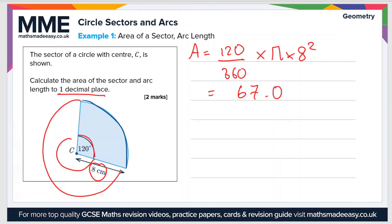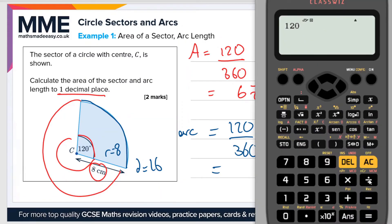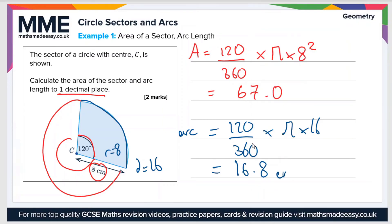Next, let's calculate the arc length — changing to blue for clarity. Arc length equals 120 divided by 360, multiplied by the circumference of the full circle, which is pi times the diameter. If the radius equals 8, the diameter equals 16, so pi times 16. Plugging into the calculator: 120 divided by 360, times pi, times 16, gives us 16.8 centimeters to one decimal place. The area is in centimeters squared because the radius is given in centimeters.